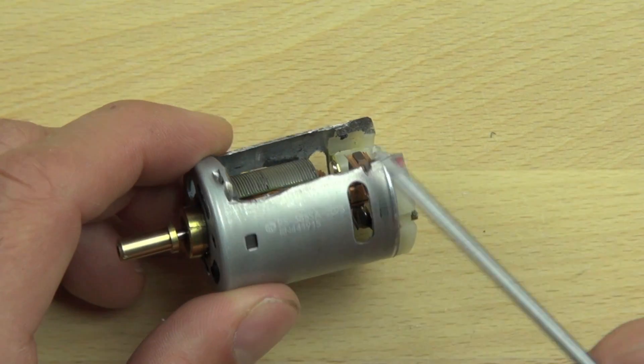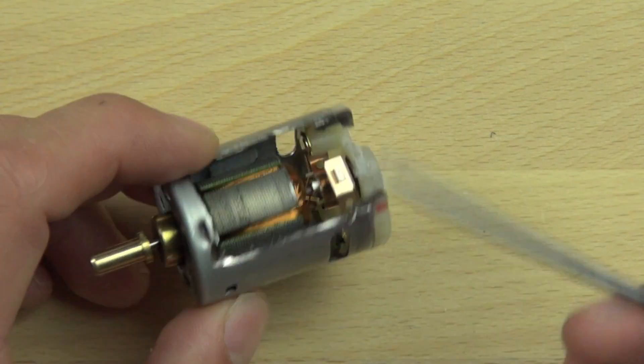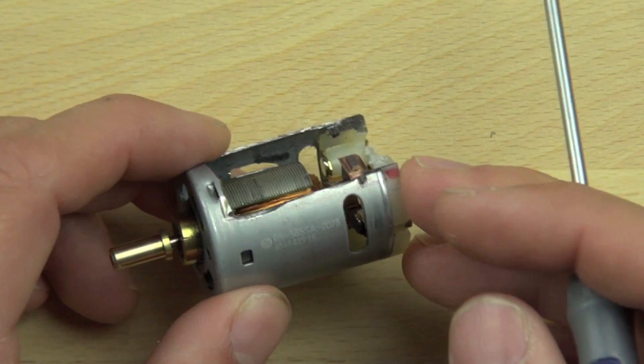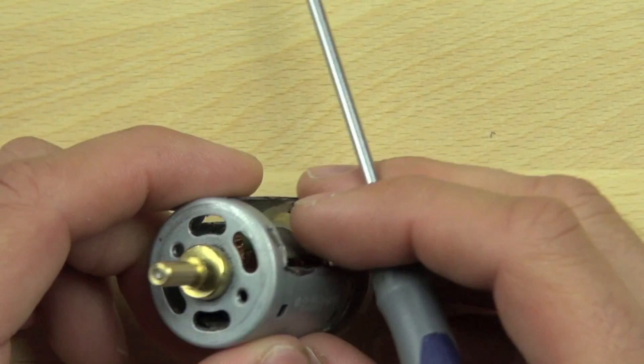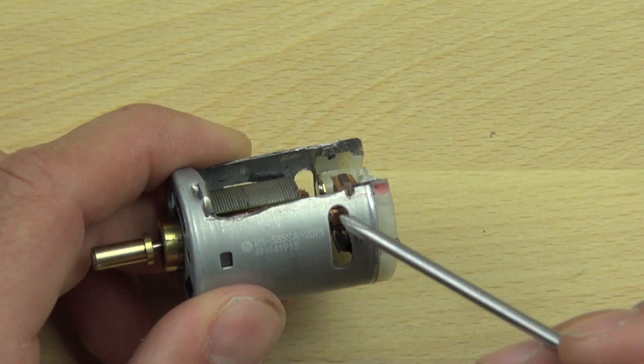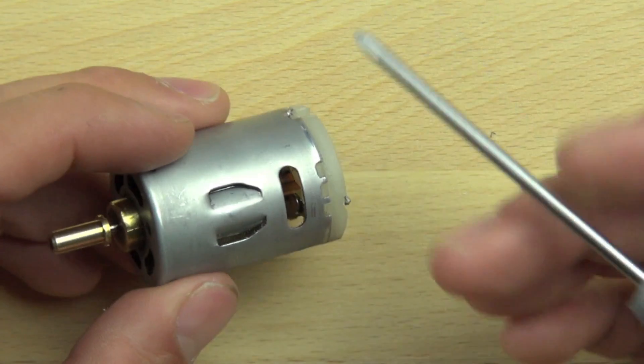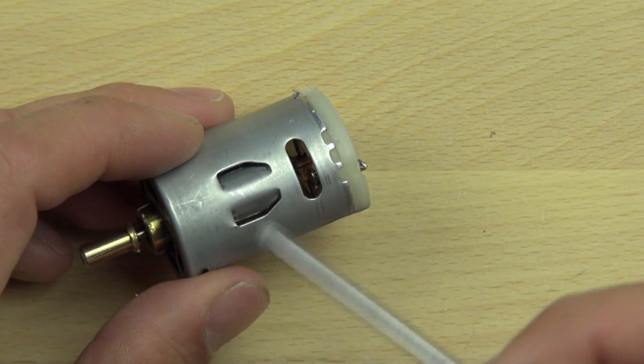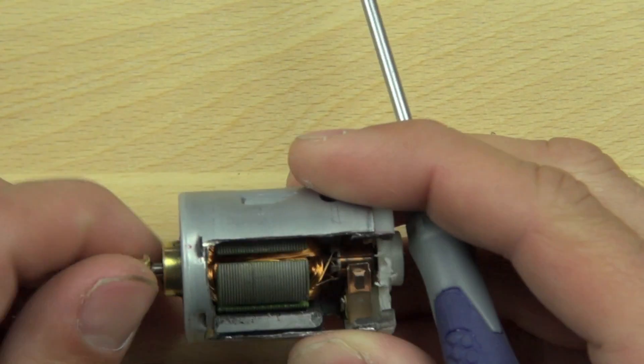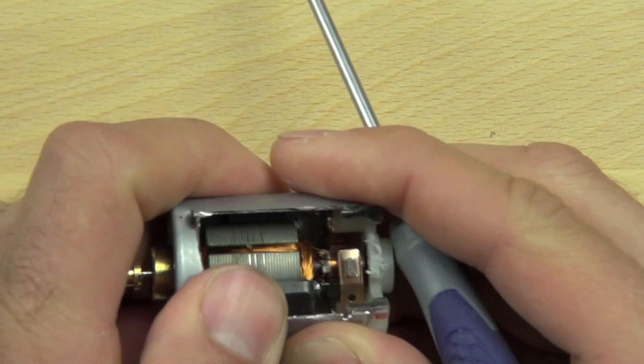Now the outer housing is made out of stamped steel and it's coated with zinc and that prevents it from oxidizing. The stamped steel has holes in it for a number of different reasons. This hole here is to allow for ventilation. And these two holes are actually tabs that are pressed against the permanent magnets that are on the inside of the motor.